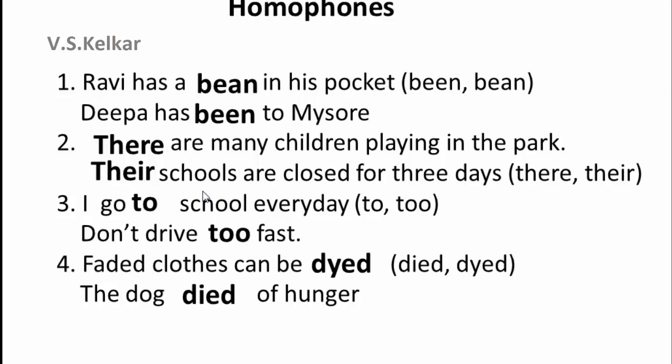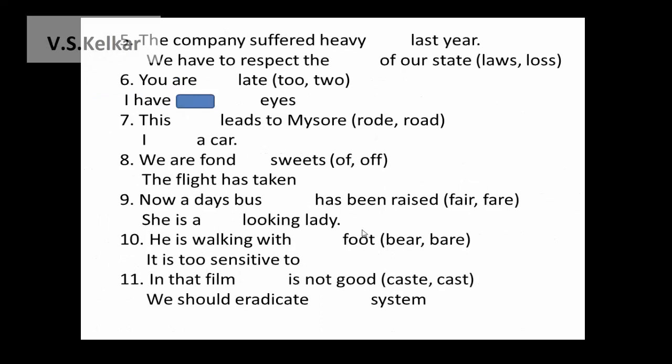You can see some more examples on the screen which have blanks and two words — homophones in the bracket. Work through the sentences and try to answer all of them. The word pairs given are: Loss/Laws, To/Too/Two, Road/Rode, Of/Off, Fair/Fare, Bear/Bare, Cast/Caste. Read the sentences carefully, try to understand them, and use the words given to fill in the blanks. You can refer to the dictionary if you want.